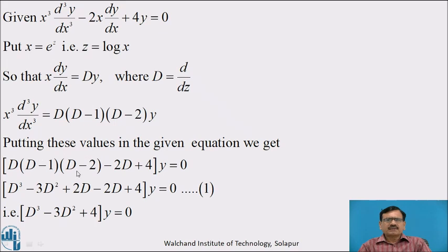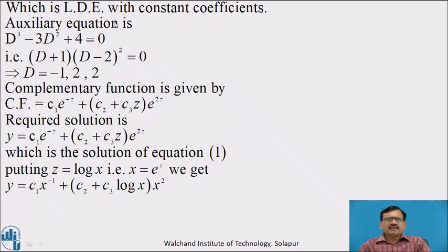By simplifying this expression, we get D cubed minus 3D squared plus 2D minus 2D plus 4 of y equal to 0. That is, D cubed minus 3D squared plus 4 of y equal to 0, which is a linear differential equation with constant coefficients, and its auxiliary equation is f(D) equal to 0, that is D cubed minus 3D squared plus 4 equal to 0.